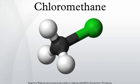Chloromethane was first synthesized by the French chemists Jean-Baptiste Dumas and Eugène Péligot in 1835 by boiling a mixture of methanol, sulfuric acid, and sodium chloride. This method is similar to that used today.